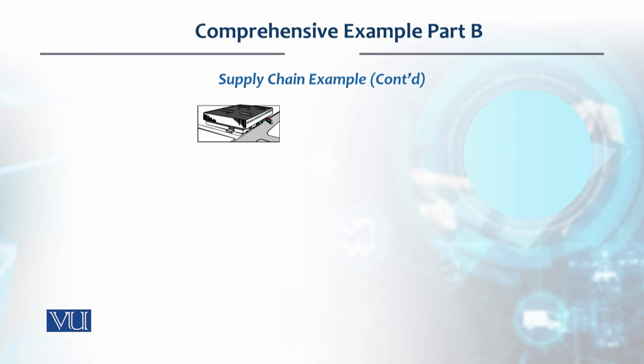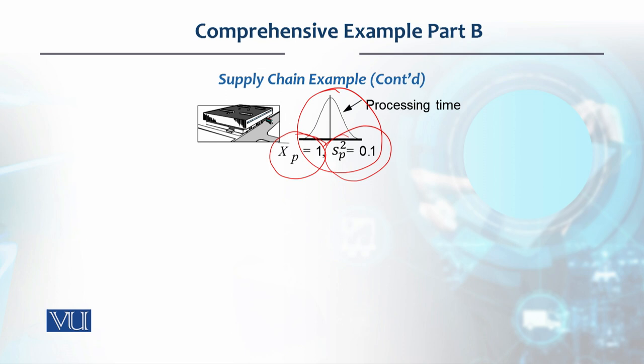Now on this basis, let's look at the schematic diagram. Let's say this is the processing plant where processing is happening, and this is the probability distribution of processing time. There is variability—the average processing time is 1, whereas the variance is 0.1.